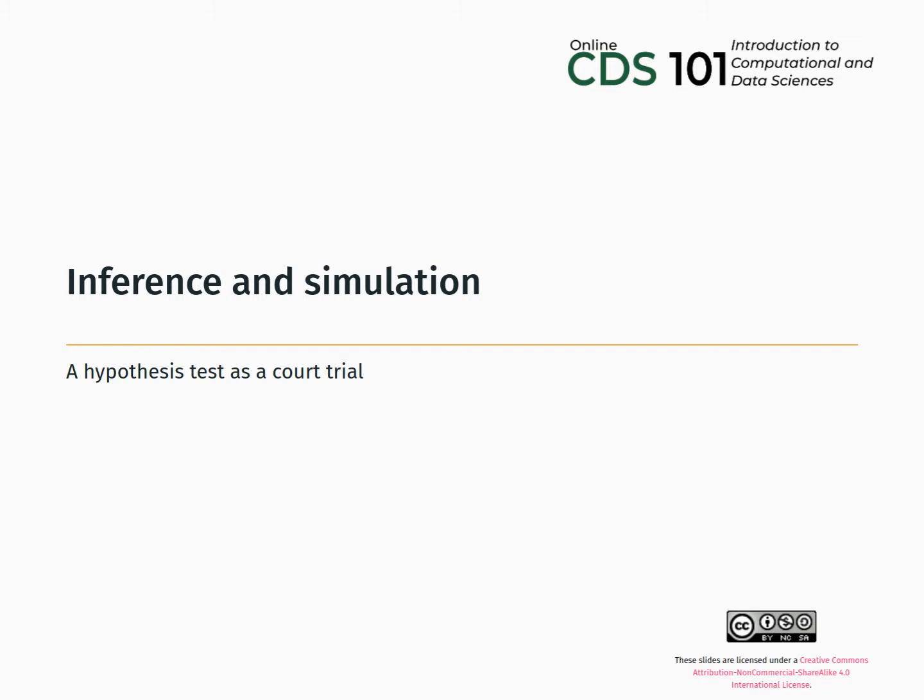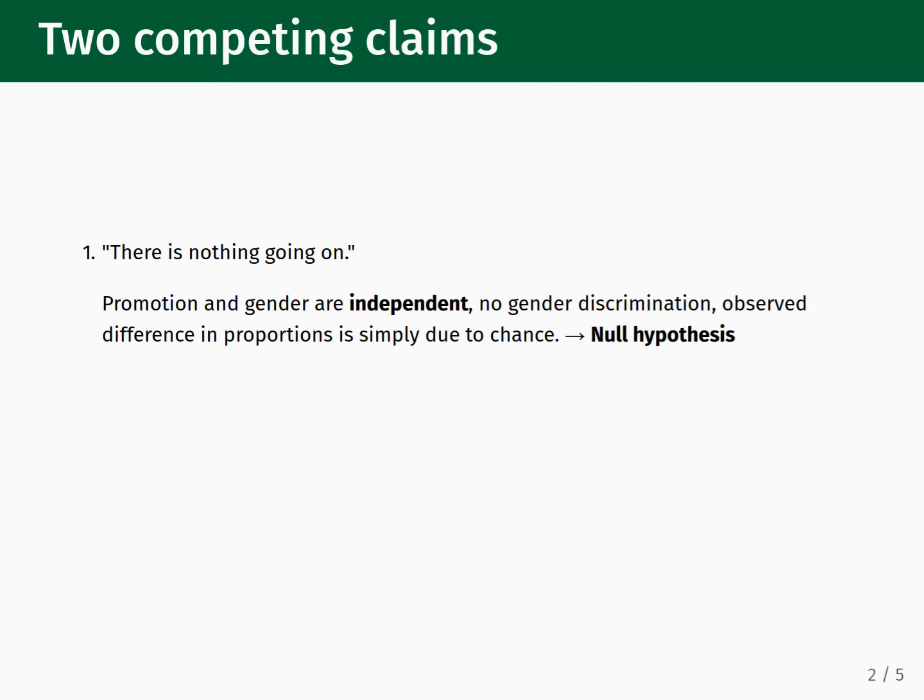In our last video, we reviewed data that was collected during a gender discrimination experiment that, without further analysis, left us with two plausible and competing claims for interpreting the meaning of the results. One claim is that there is nothing going on.